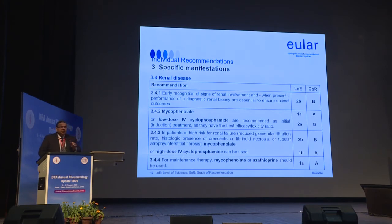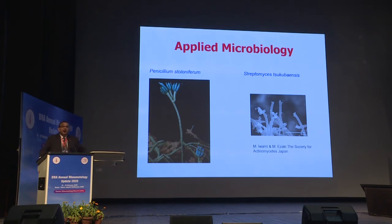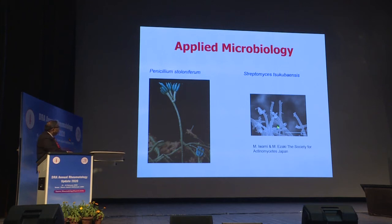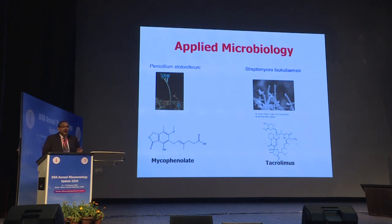EULAR recommendations are widely cited. In patients at high risk for renal disease, mycophenolate or cyclophosphamide are the anchor drugs. We grew up with cyclophosphamide, but over the last 15 years mycophenolate mofetil has become prominent. Rheumatologists also need to be aware of applied microbiology — the fungus Penicillium stoloniferum and Streptomyces tsukubaensis have given us molecules that over the last 15 to 20 years have pushed cyclophosphamide more to the sidelines as a primary drug.